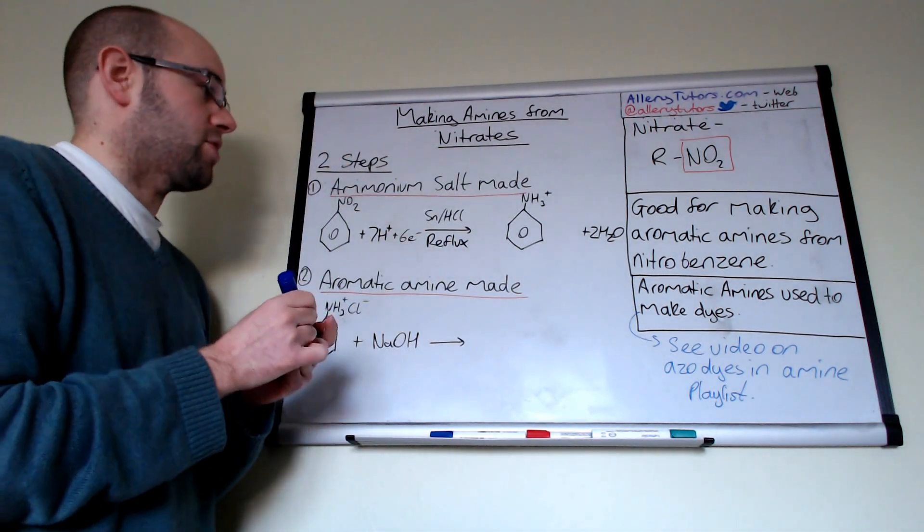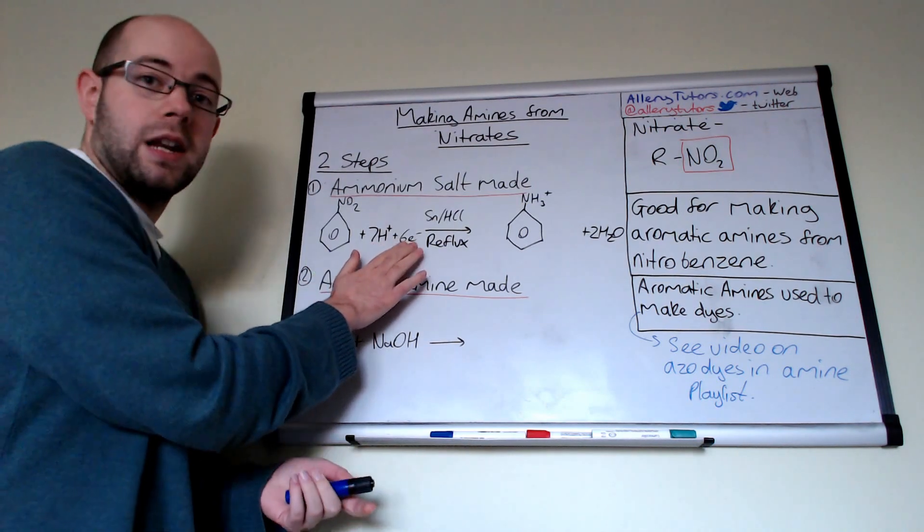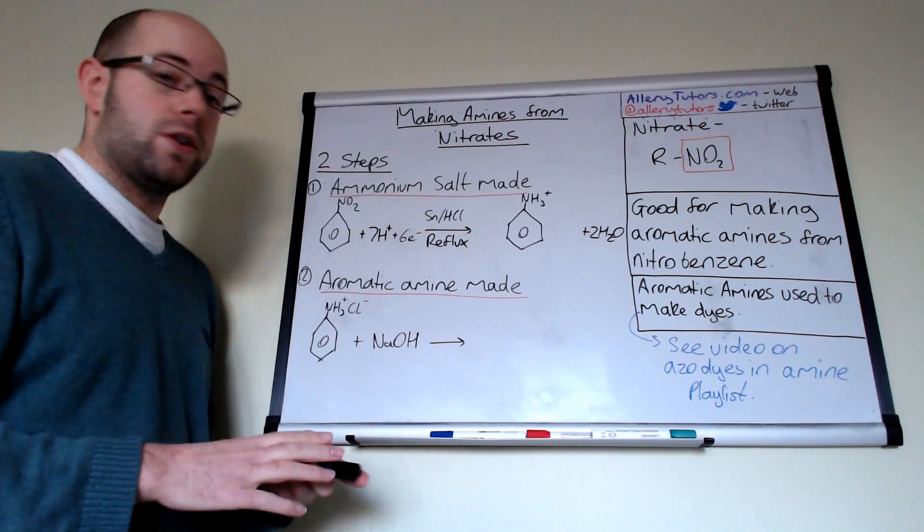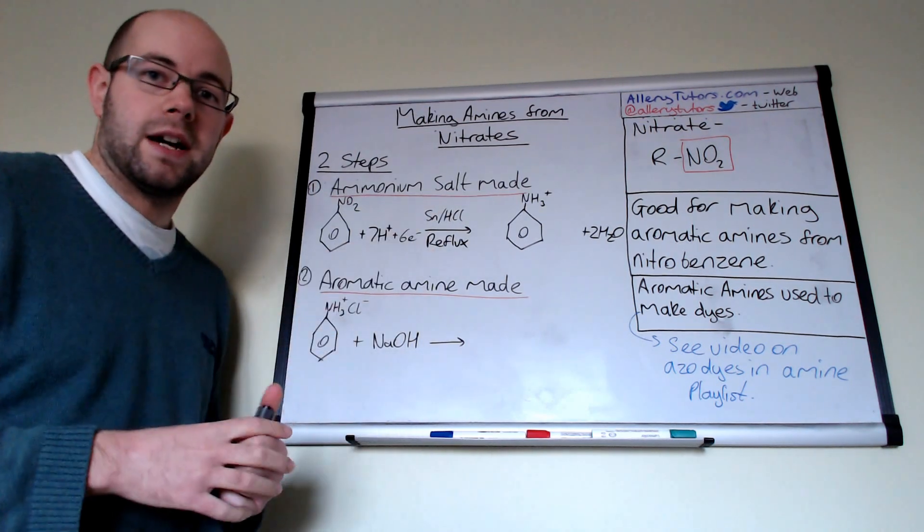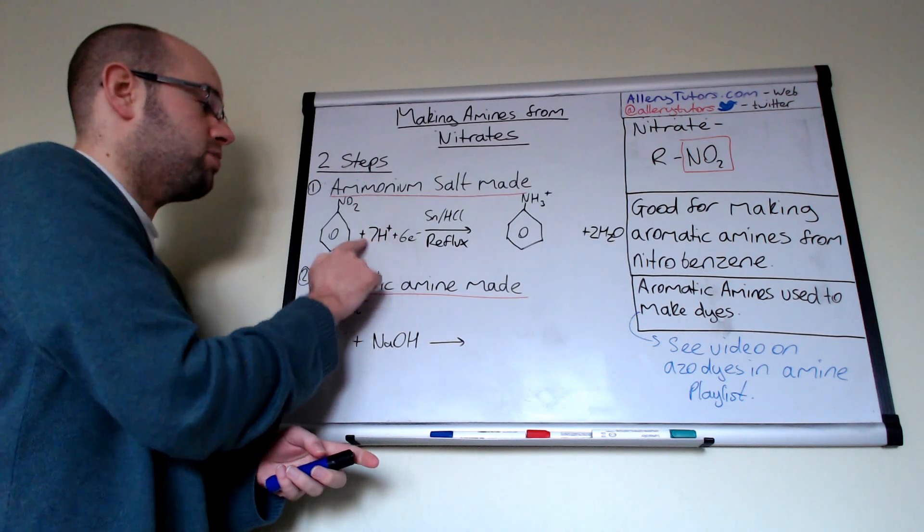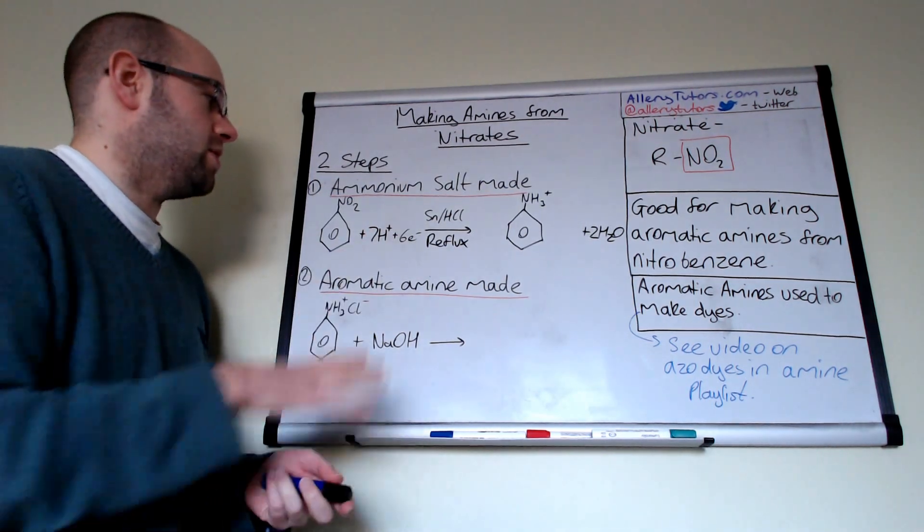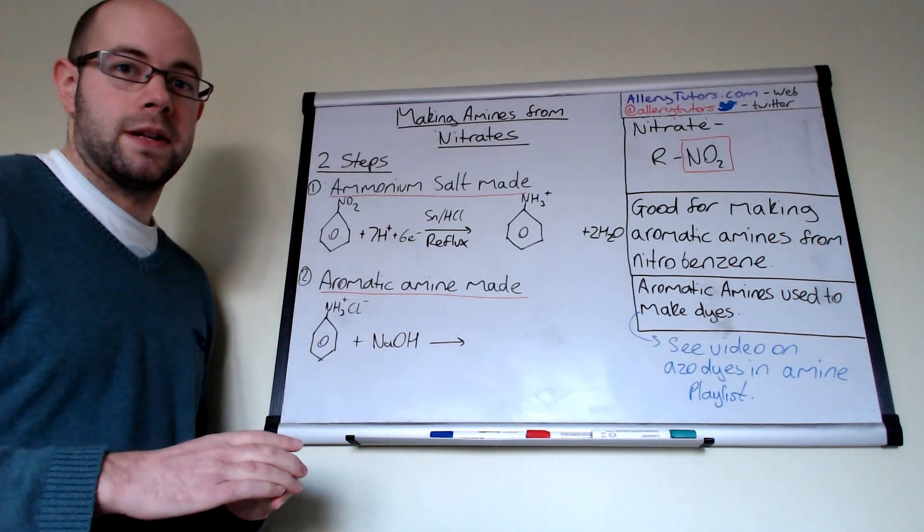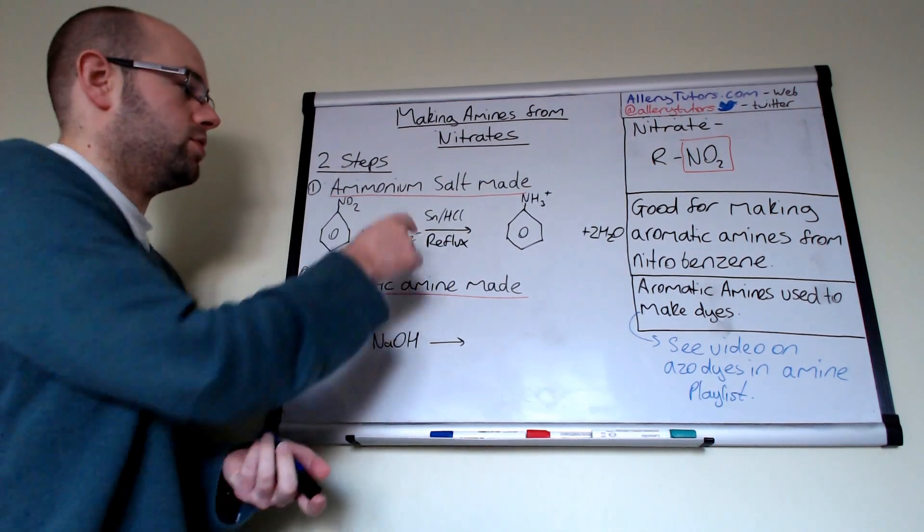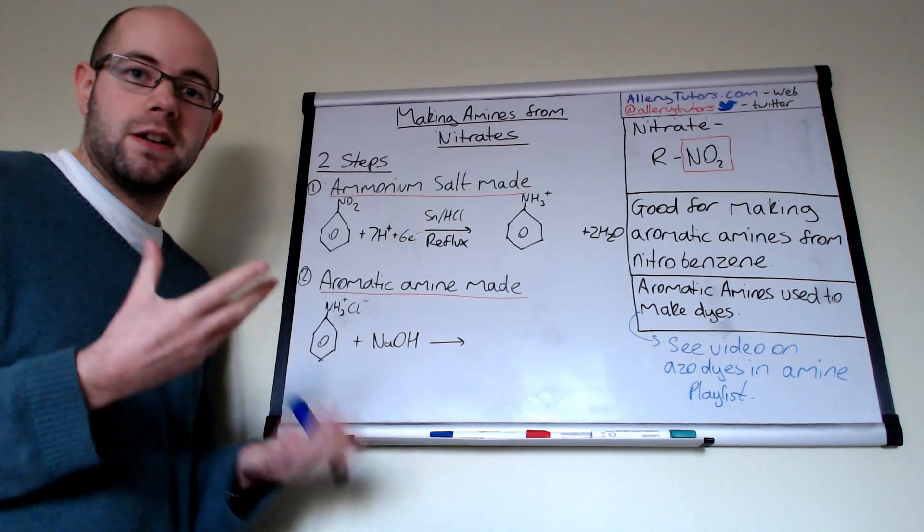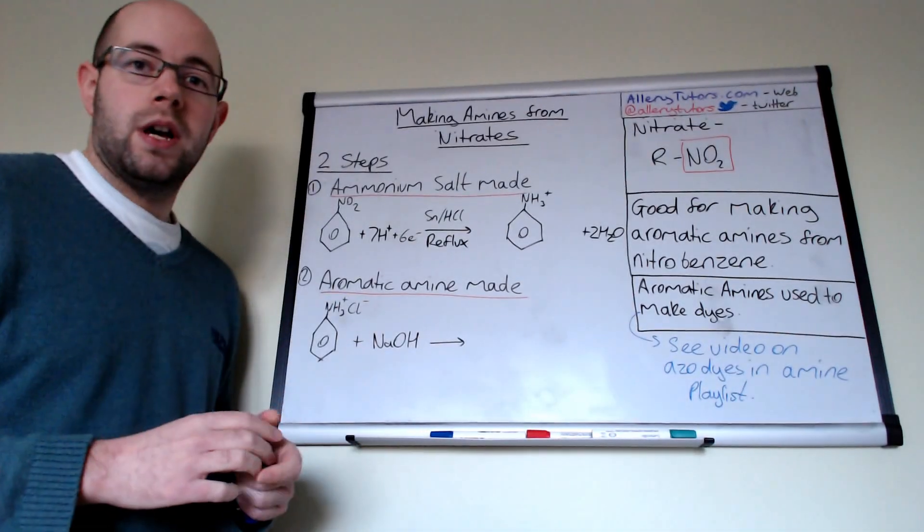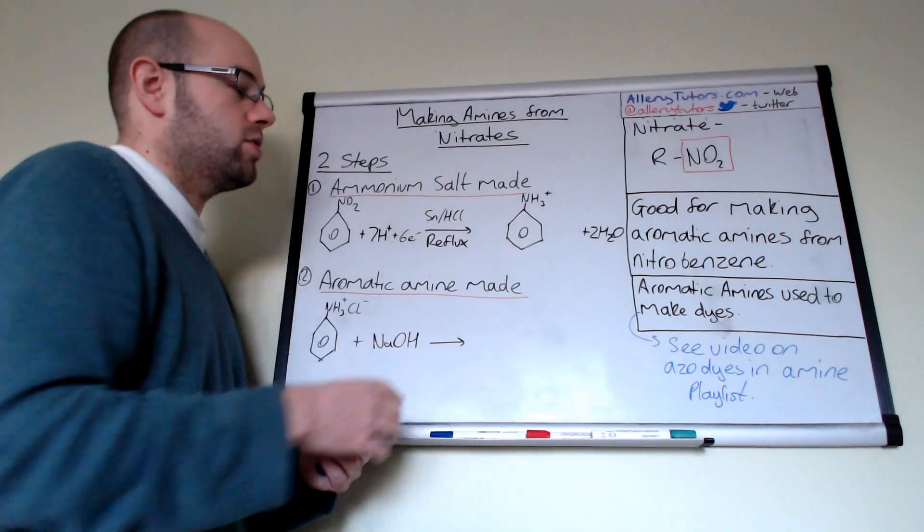So you can see that this reaction initially we need protons and we need electrons. Now these protons actually come from our first reagent, which is concentrated hydrochloric acid. So when we take our nitrobenzene we add HCl, and this provides seven H+ ions to actually get this reaction to go in the first place. But in order for this to work you also need electrons. Now our source of electrons comes from the tin, and the tin can vary its oxidation state and supply the electrons in order to form your ammonium salt, which is over here.